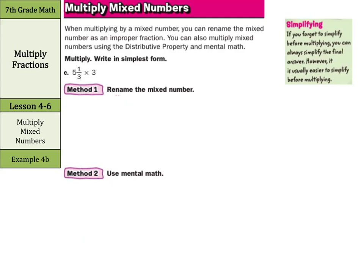What about five and one-third times three? Using the renaming method, five and one-third is sixteen-thirds, times three over one. We can divide the threes by three, giving us one and one. We're left with sixteen times one is sixteen, one times one is one, which equals sixteen. That was pretty quick.